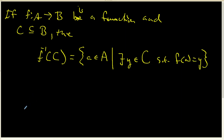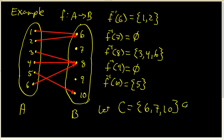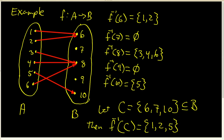Going back to the previous example, let C be the set containing 6, 7, and 10 — that's certainly a subset of set B. The pre-image of C is computed by looking at each element of C. The pre-image of 6 was 1 and 2, so 1 and 2 belong to the pre-image of C. Nothing got sent to 7, so we add nothing there. And 5 is the one thing that got sent to 10. So the pre-image of C is the set containing 1, 2, and 5.